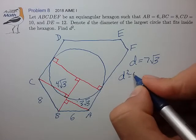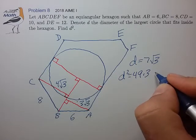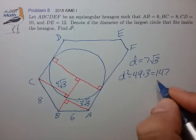So diameter squared: 49 times 3, 147. Final answer.